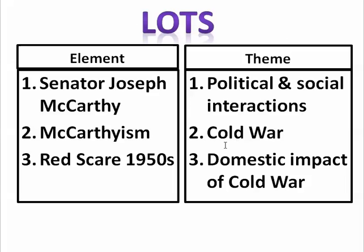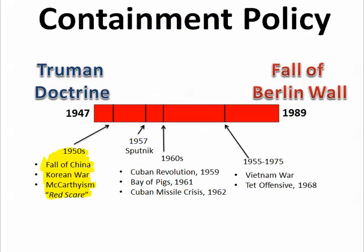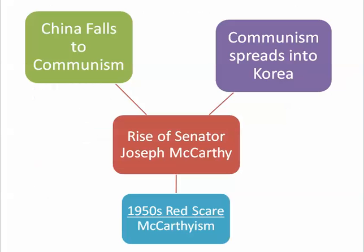The theme is political and social interactions, the Cold War, and the domestic impact of the Cold War. We talked about the implications of containment policy in the last video. Here we want to talk about the fall of China to communism in the 1950s, the Korean War, communism trying to spread into Korea, and domestically the rise of Joseph McCarthy, McCarthyism, paranoia, and the Red Scare of the 1950s. This is very much a part of the Cold War.